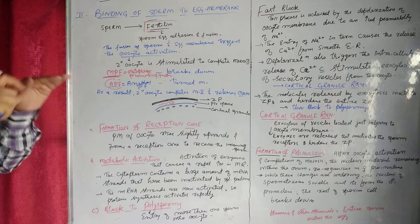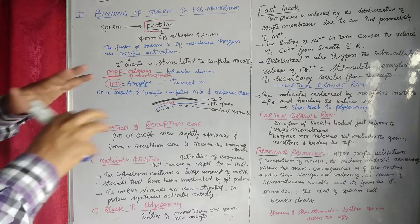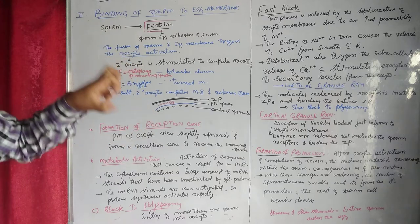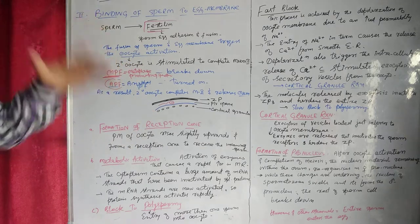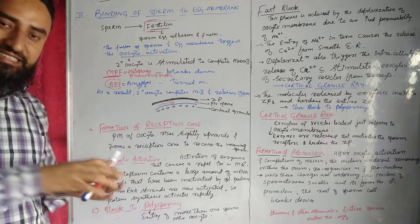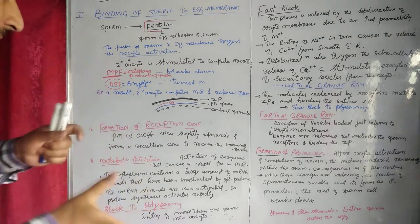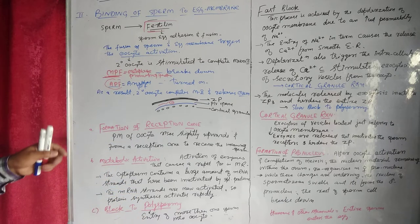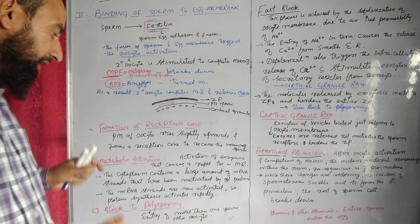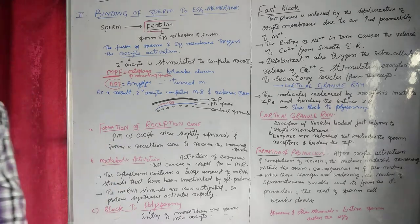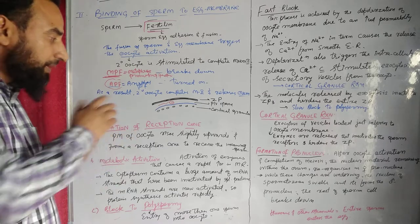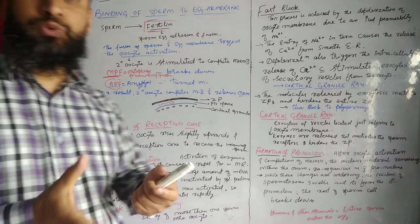During egg activation, there are three steps. Number one: a reception cone is formed. Number two: metabolic activation takes place. Number three: blocked polyspermy occurs. So egg activation happens in these three steps.